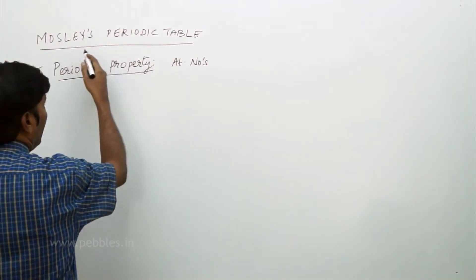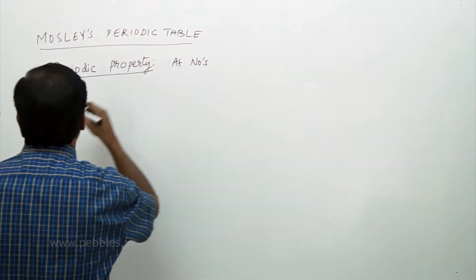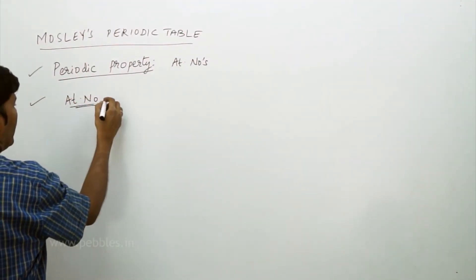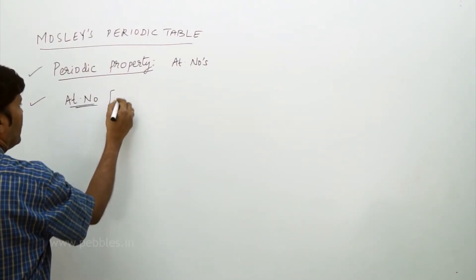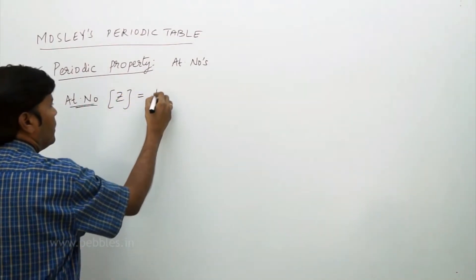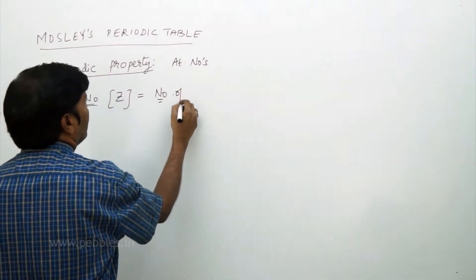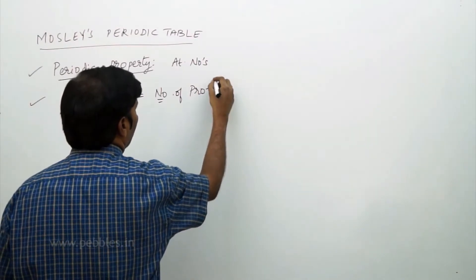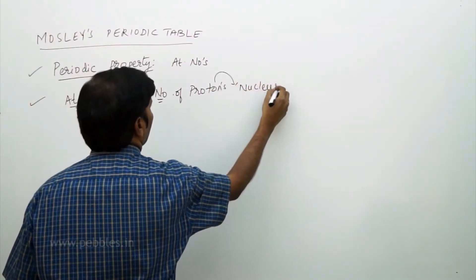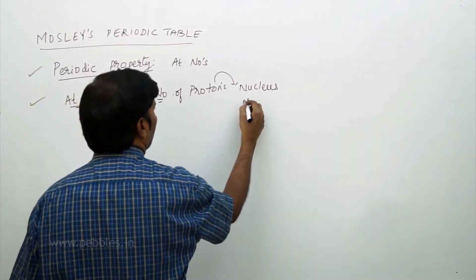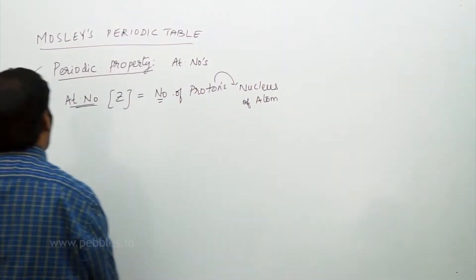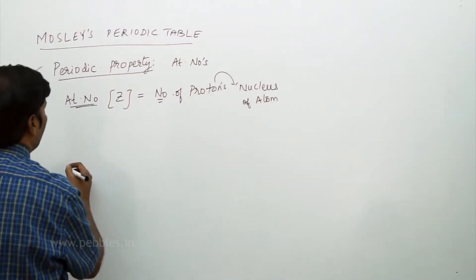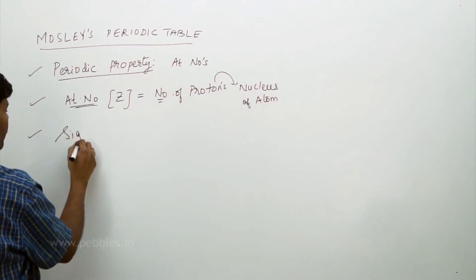The periodic property according to Moseley's periodic table is atomic numbers. The atomic number of an element is given by the symbol Z, and it actually represents the number of protons present in the nucleus of an atom.